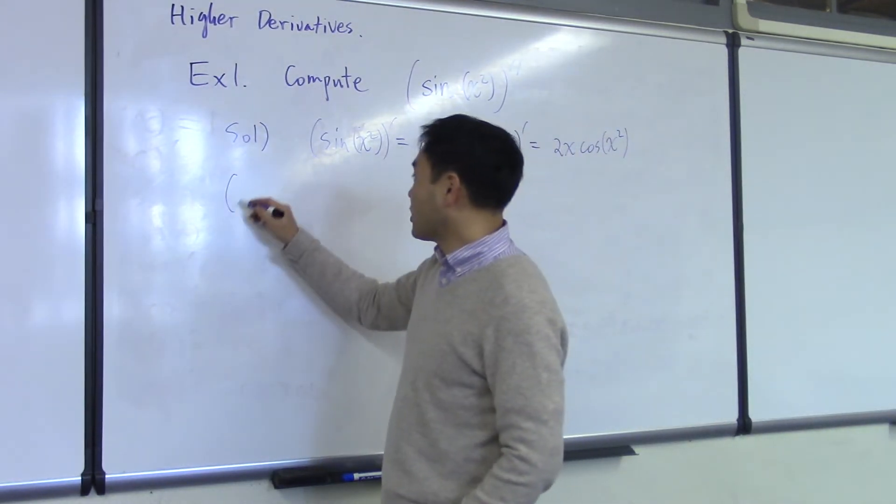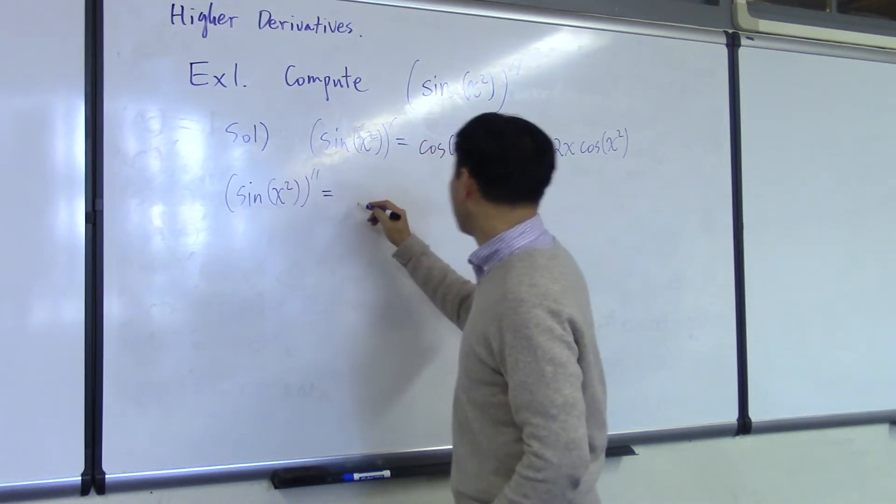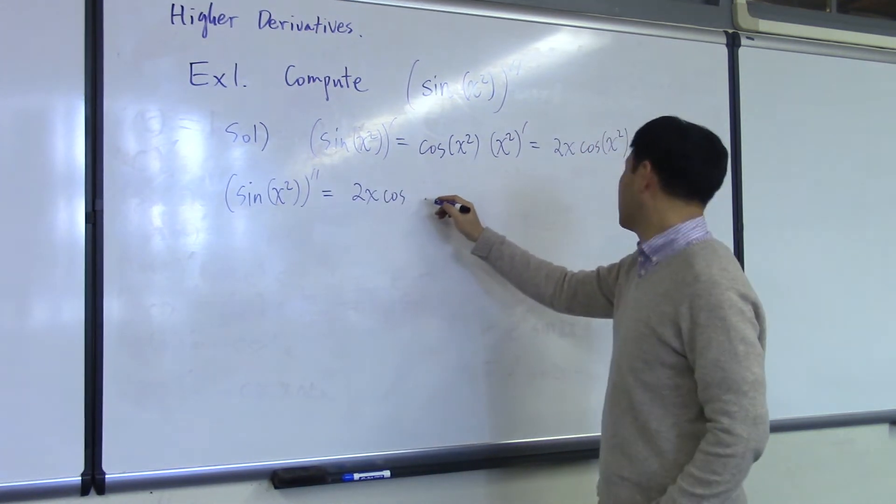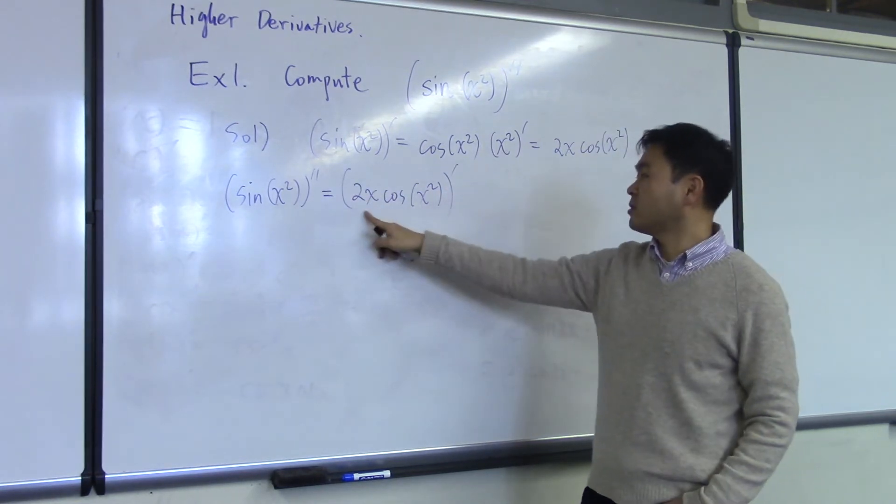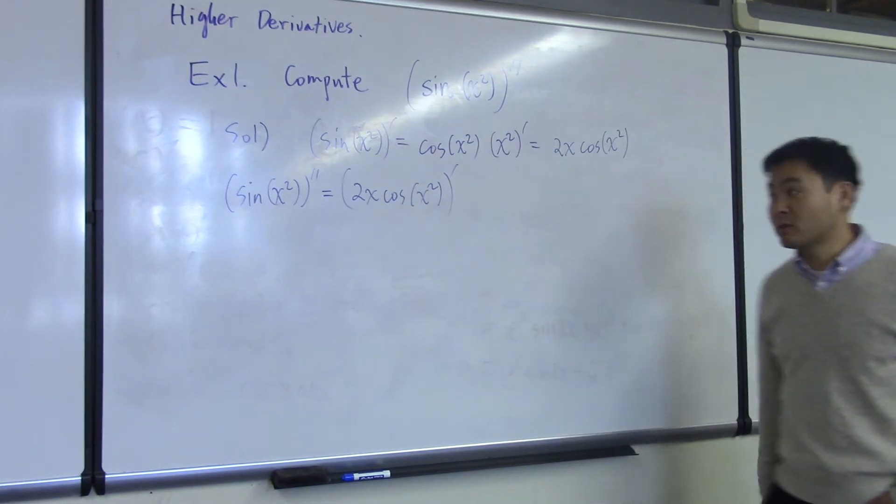Now in order to get the second derivative, you differentiate the first derivative. Since this is already differentiated once, differentiating one more time gives you the second derivative.